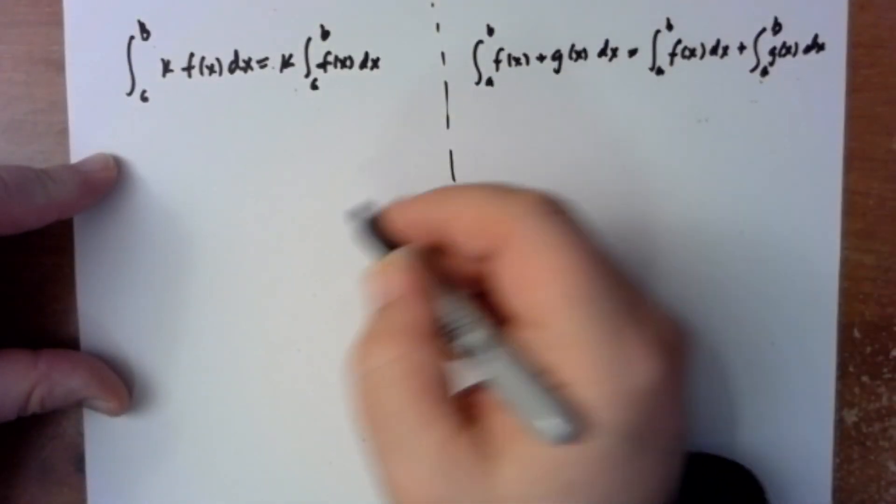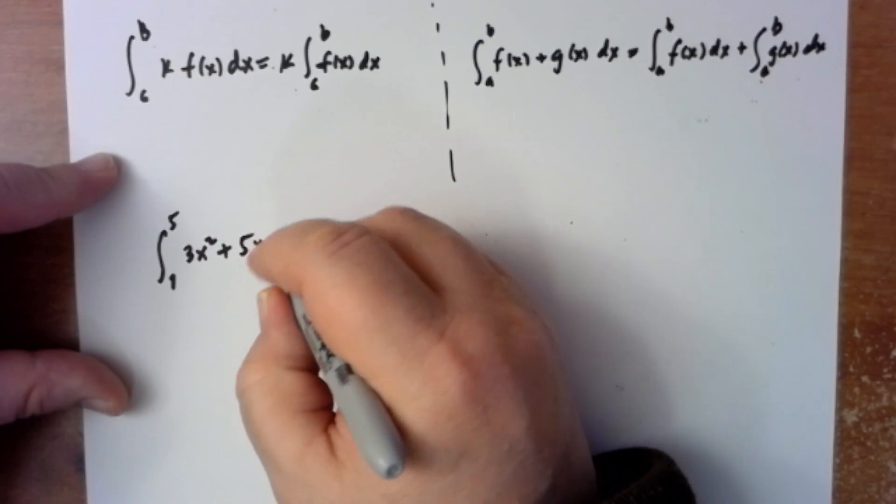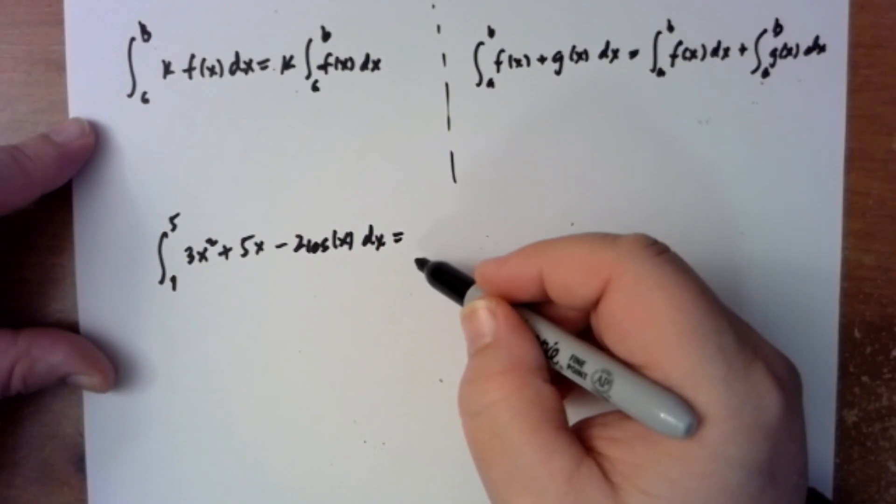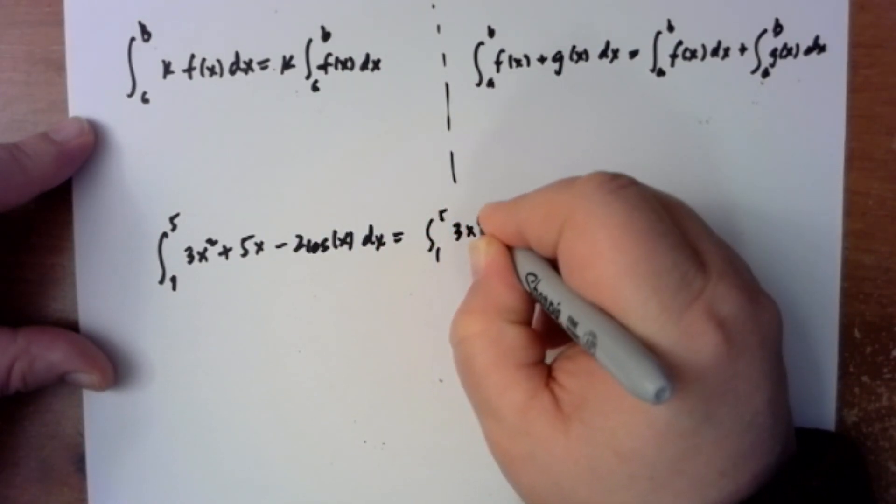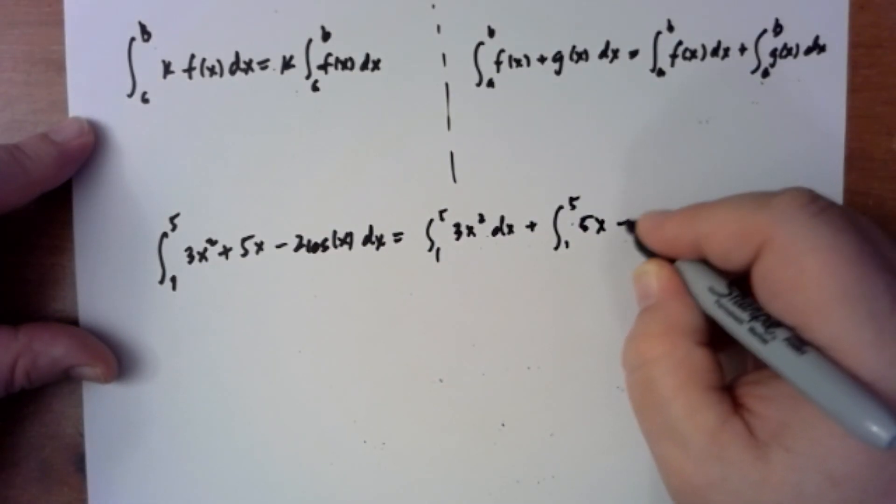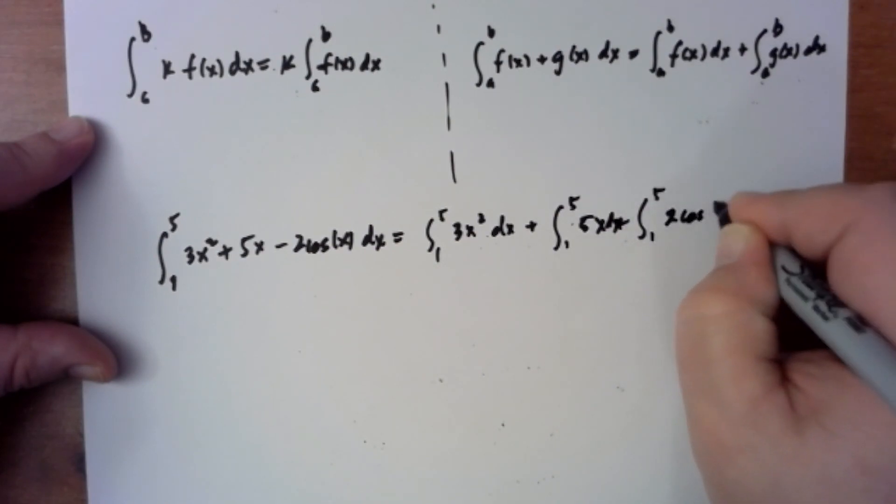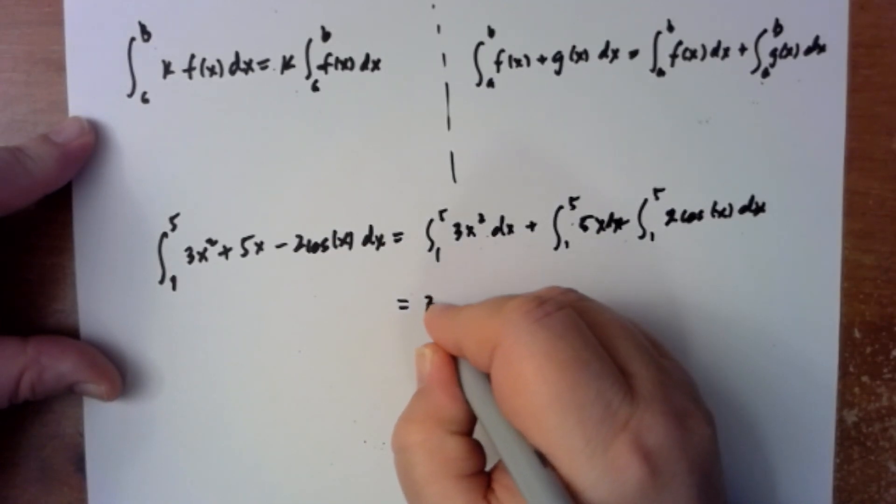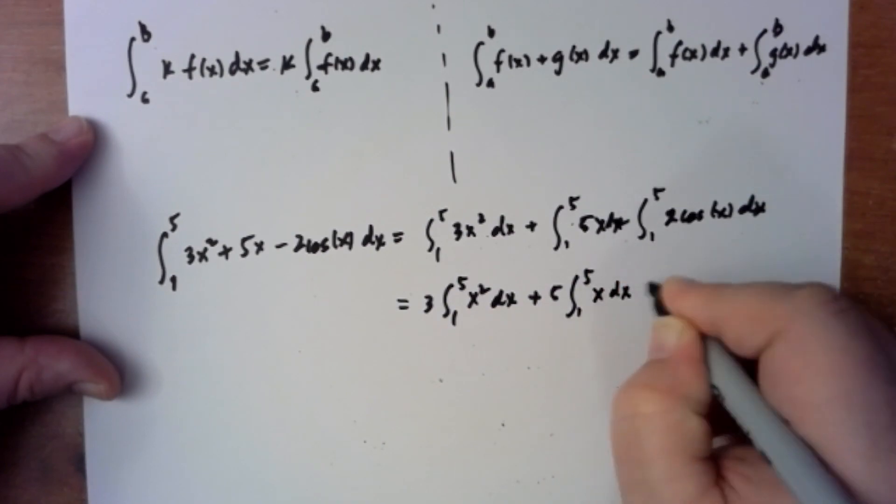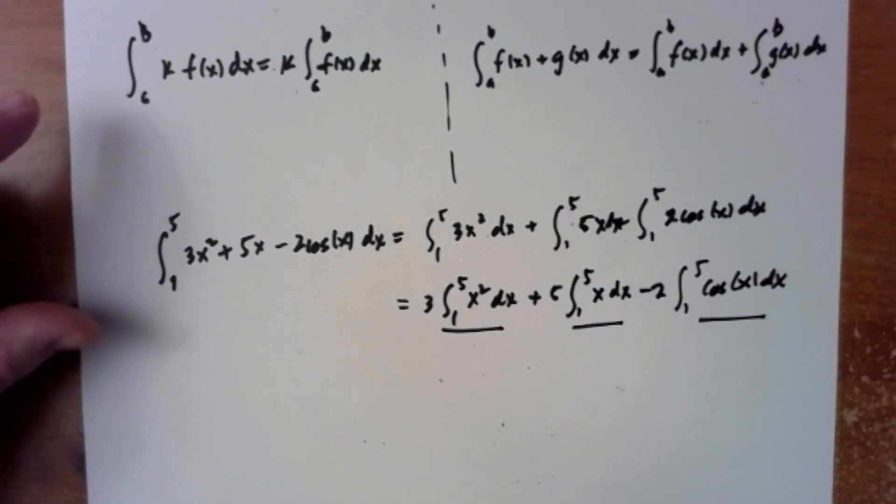Just as an example of where this comes into play: if you're taking the integral from one to five of 3x squared plus 5x minus 2 cosine(x) dx, this means the first rule says that you can break this up into a sum. The integral from one to five of 3x squared dx plus the integral from one to five of 5x dx minus the integral from one to five of 2 cosine(x) dx. And then you can pull the constants out - so you get 3 times the integral from one to five of x squared dx plus 5 times the integral from one to five of x dx minus 2 times the integral from one to five of cosine(x) dx. And in the next section we'll figure out how to evaluate those.